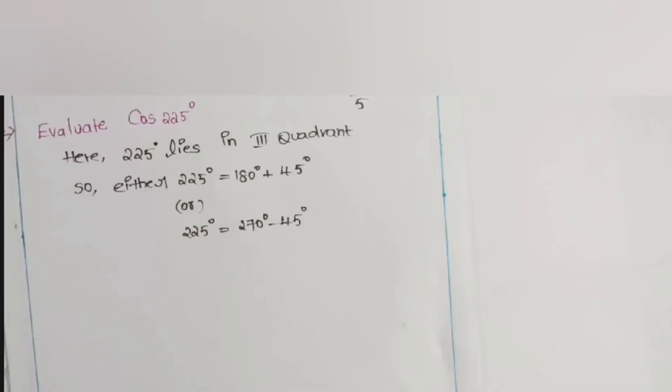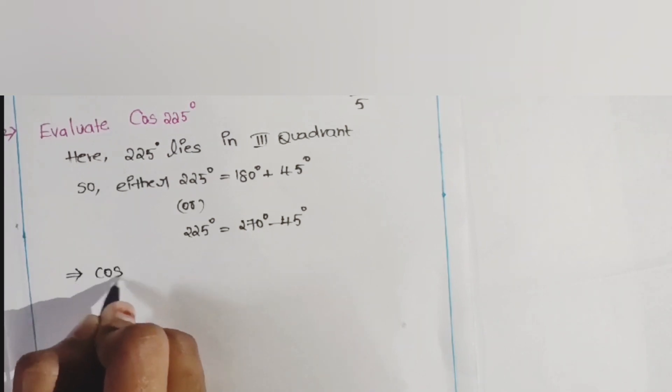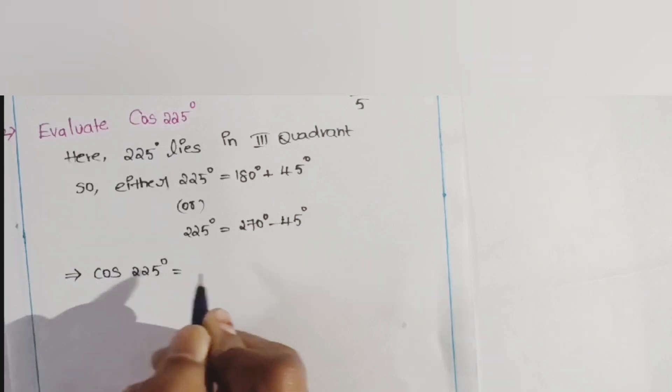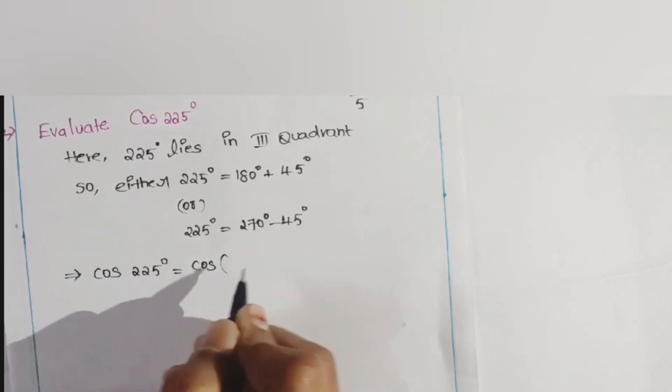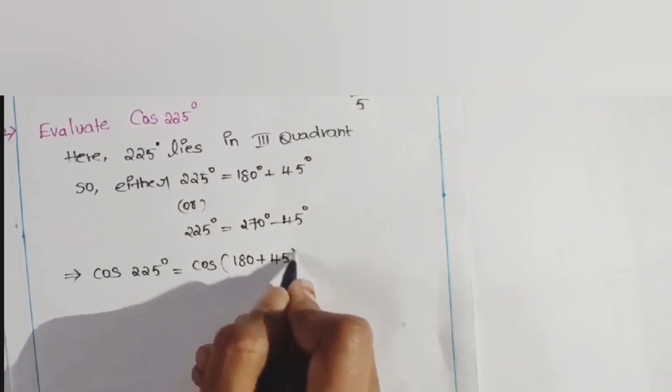We can write in these two ways: either 180° plus 45° or 270° minus 45°. So first I am taking 180° plus 45°. So cos 225° is equal to cos(180° + 45°).